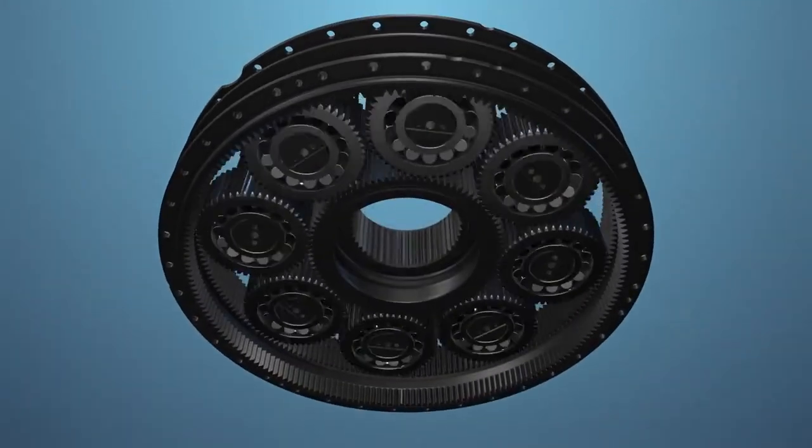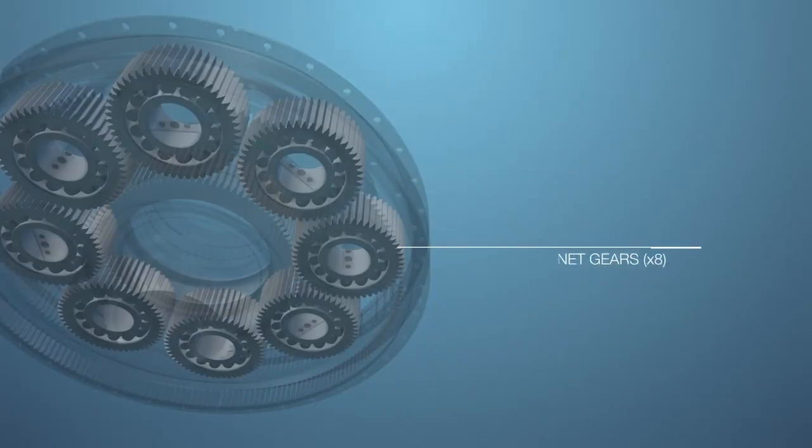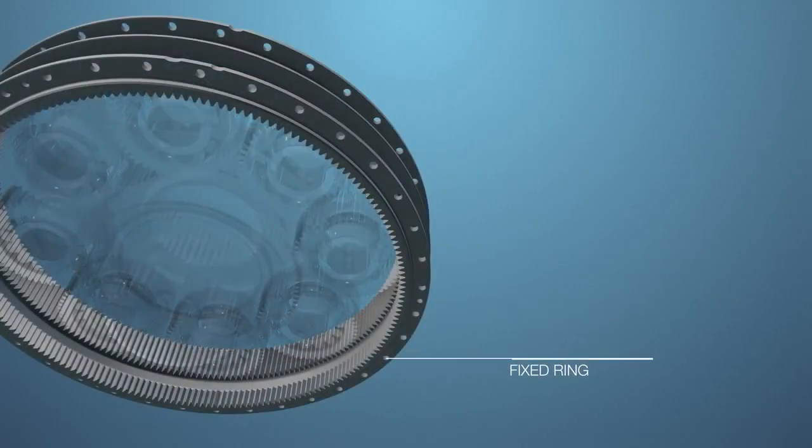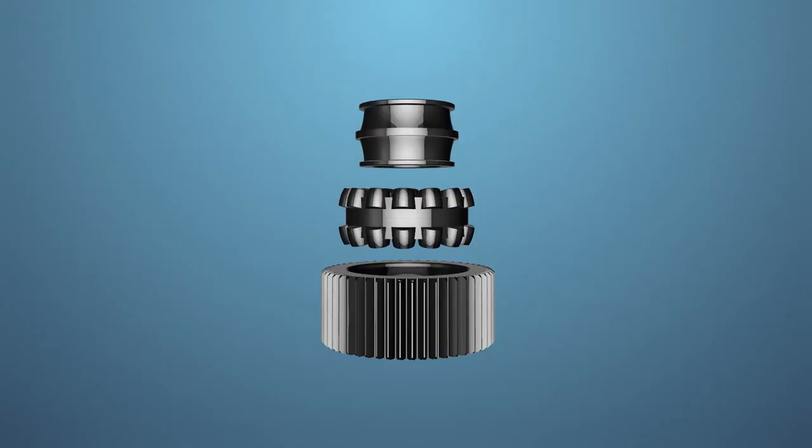The second stage epicyclic gear train comprises a sun gear, eight planet gears, a planet carrier and a fixed ring. Each planet gear contains two inner races, two rows of rollers, one outer ring.